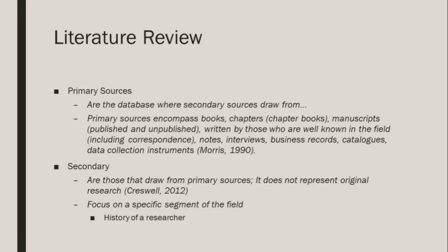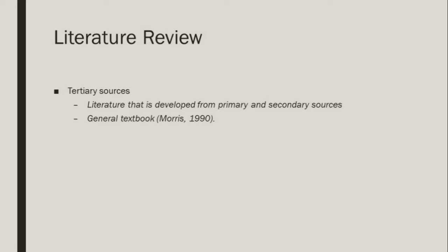Secondary sources are those that draw from primary sources and do not represent original research. The focus is generally on some segment of the field, such as the history of a researcher. It is very important to understand the history of a researcher — once you understand the framework from which they were operating, you can identify their biases. Tertiary sources are developed from primary and secondary sources; a good example would be a textbook. For your annotated bibliography or literature review, you will be using mostly primary sources.